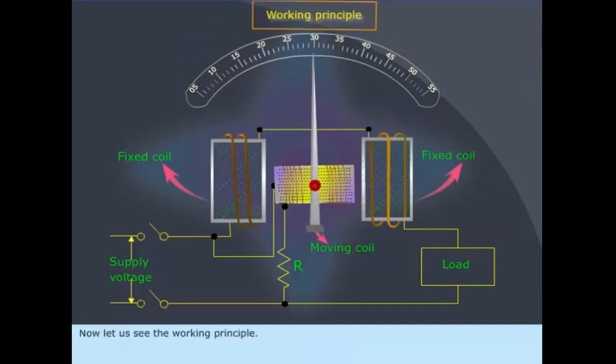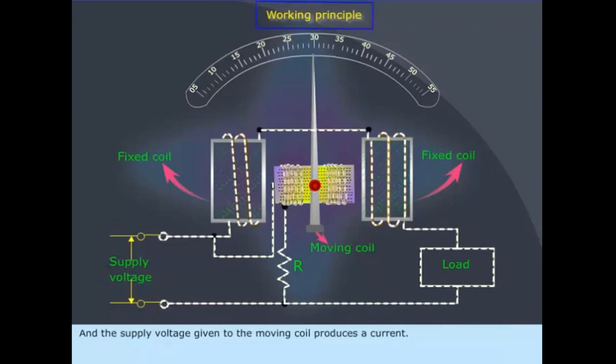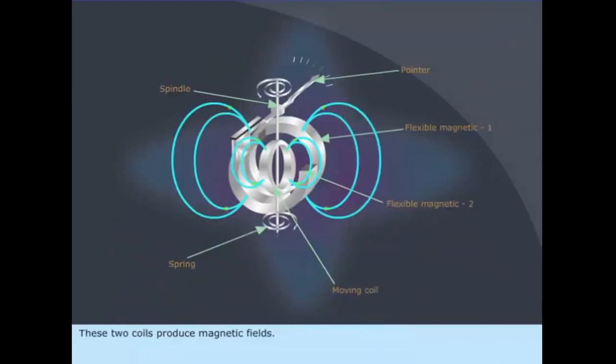Now let us see the working principle. When supply is given to the circuit, the line current passes through the fixed coils. The supply voltage given to the moving coil produces a current. These two coils produce magnetic fields.